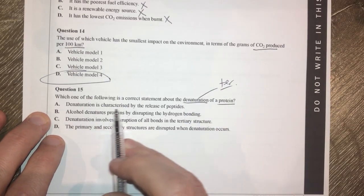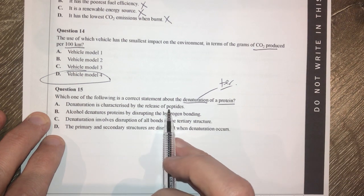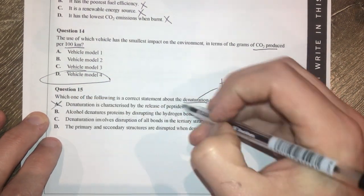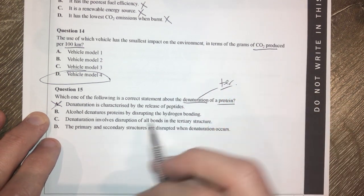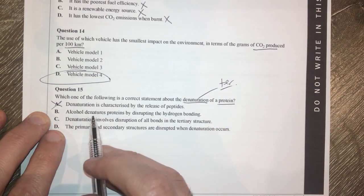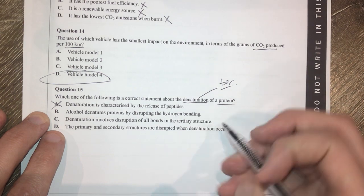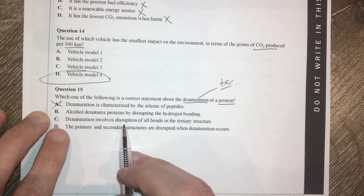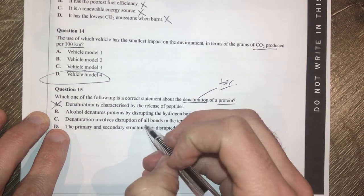Denaturation is characterized by a release of peptides. That is not right because breaking up of the primary structure is a release of peptides. Alcohol denatures proteins by disrupting hydrogen bonding. That's interesting.